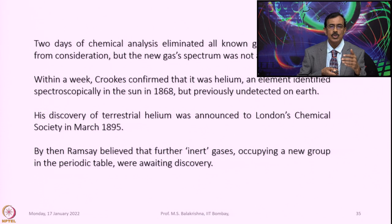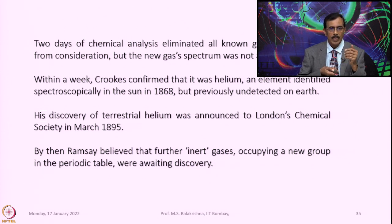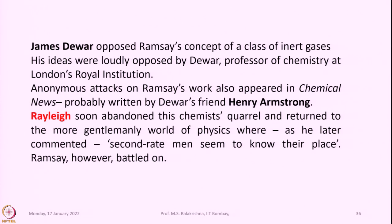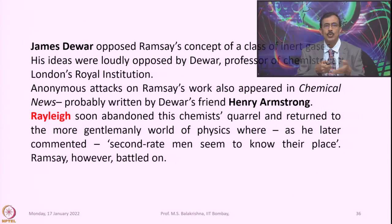By then, Ramsey believed that further inert gases occupying a new group in the periodic table were avoiding discovery. James Dewar, another contemporary of Ramsey, opposed Ramsey's concept of a class of inert gases. His ideas were loudly opposed by Dewar, a professor of chemistry at London's Royal Institution.